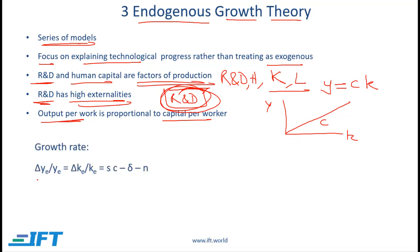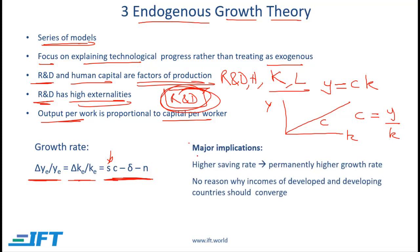With this theory, the growth rate of output per worker equals the growth rate of capital per worker, which equals s times c minus the depreciation rate minus the growth rate of labor. Here s is the saving rate and c is the ratio of output per worker to capital per worker. One major implication is that a higher saving rate will lead to a permanently higher growth rate — if s increases, the entire expression increases, and this is not just a temporary effect.